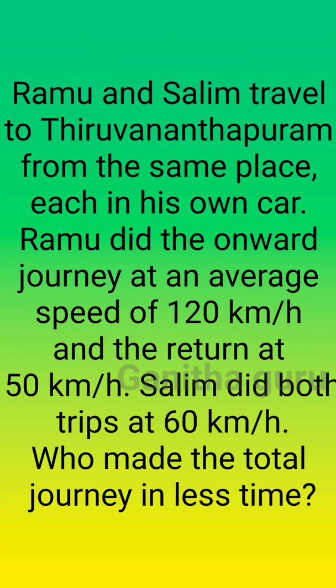Rammu and Sali traveled to Thiruvandamaram from the same place, each in his own car. Rammu did the onward journey at an average speed of 120 km per hour and the return at 50 km per hour. Sali did both trips at 60 km per hour. Who made the total journey in less time?